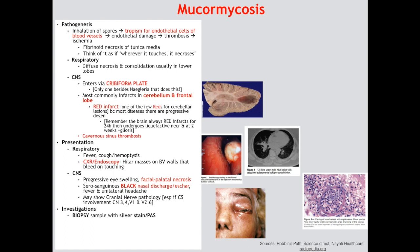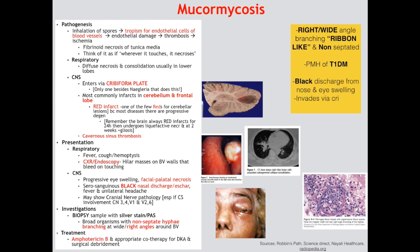Because Mucor can spread so quickly to the CNS, the first-line drug is usually IV amphotericin B. To wrap up the key points: non-septated hyphae branching at wide right angles, the patient could have a past medical history of type 1 diabetes, and the black discharge from the nose is what will distinguish this from an Aspergillus pathology.